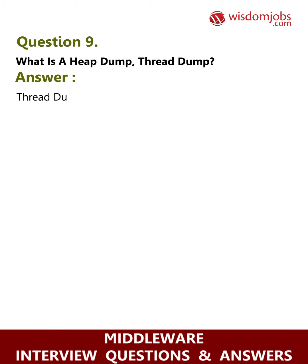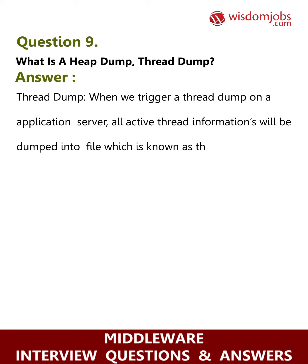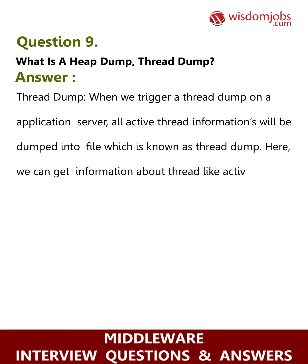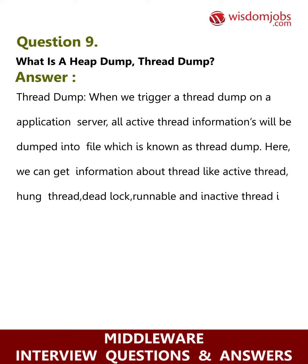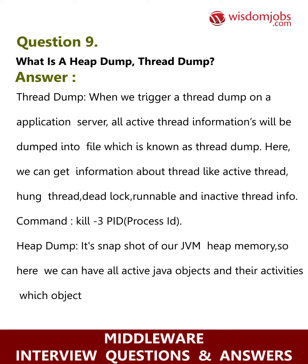Question 9: What is a heap dump and thread dump? Answer - Thread dump: when we trigger a thread dump on an application server, all active thread information is dumped into a file. We can get information about threads such as active, hung, deadlocked, runnable, and inactive threads using the command kill -3 [PID]. Heap dump: it is a snapshot of our JVM heap memory, showing all active Java objects, their activities, which object is doing what, and how much memory it is occupying.